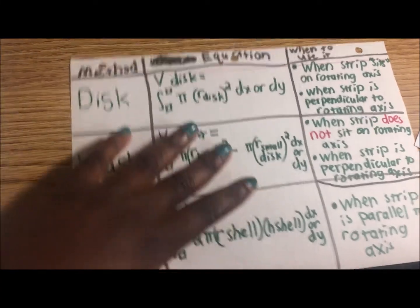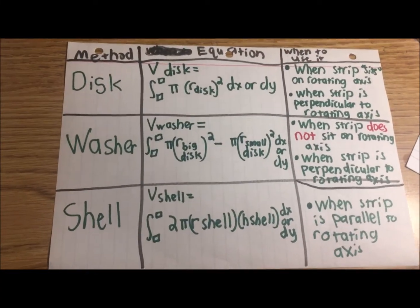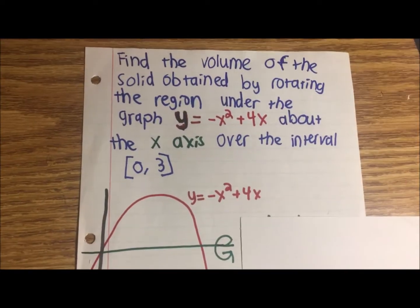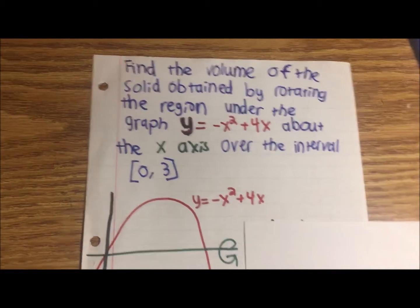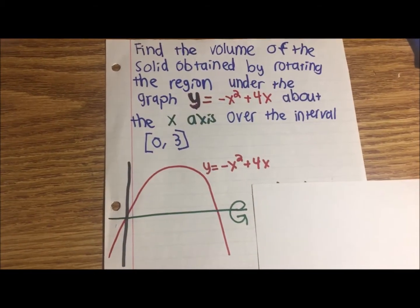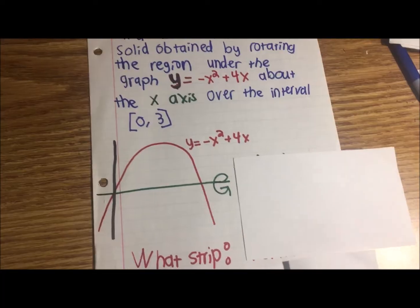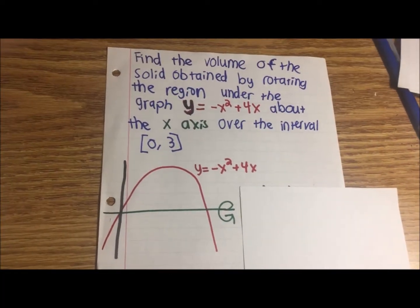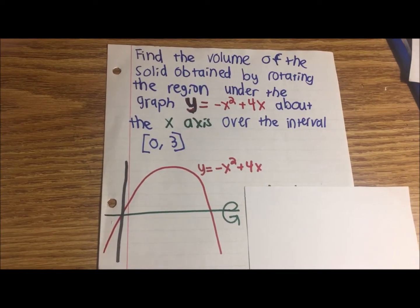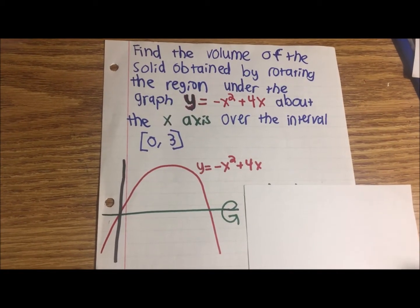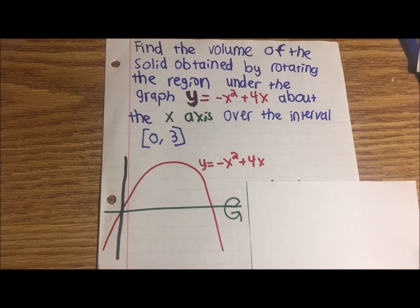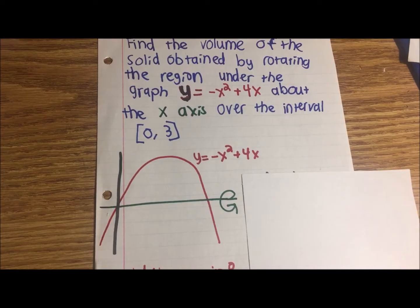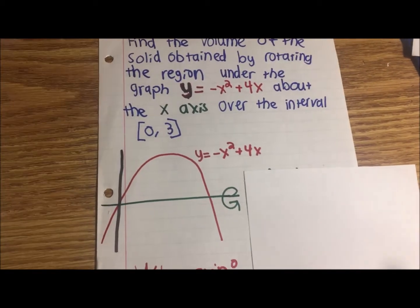I'll explain what all of this means when we go through some examples. Now I'm going to go through some examples to show you which method to use. The first question: find the volume of the solid obtained by rotating the region under the graph y equals negative x squared plus 4x about the x-axis over the interval 0 to 3.